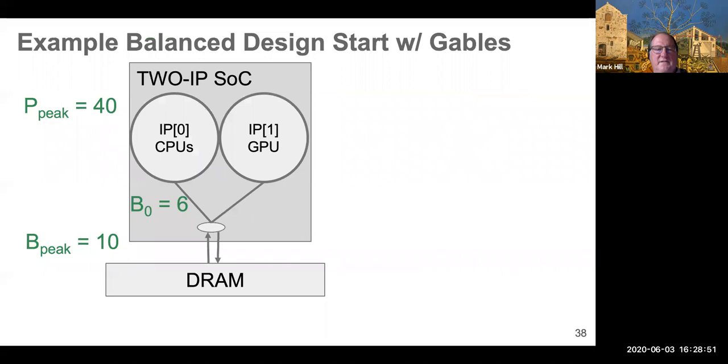So I find people learn better with a simple example than the equations, even though the equations are elegant. So let's do a two IP SoC. It just has CPUs and a GPU. And of course, this is so simple, you don't think you need Gables, but I'll show you it's not as simple as you might think.